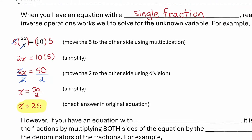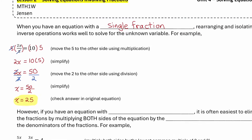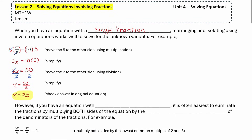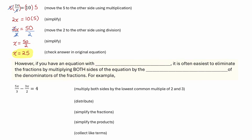Now let's move on and look at what happens if we have multiple fractions within the same equation. If you have an equation with multiple fractions, it's often easiest to eliminate the fractions by multiplying both sides of the equation by the lowest common multiple of the denominators.